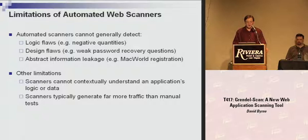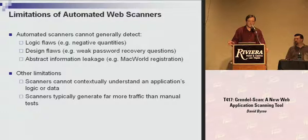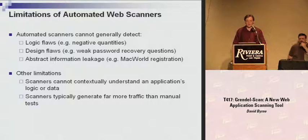Abstract information leakage is another example. A year ago, the Macworld Expo registration page had coupon codes worth potentially several hundred dollars discount, and in the JavaScript source code there were MD5 hashes for valid coupon codes used for client-side validation. It was possible to brute force through the entire list, check against the MD5 hashes, find valid coupon codes, and submit one — obviously a serious vulnerability, but a scanner can't detect this. Scanners really can't understand application logic or data to understand how your application is functioning. A human penetration tester is typically able to figure out things the scanner would not. Also, scanners generate far more traffic than a manual test, so if you're looking for stealth, an automated scanner is probably not your best choice.